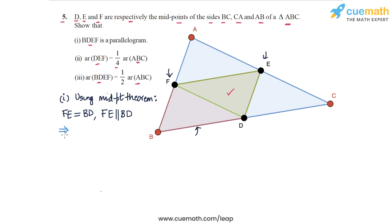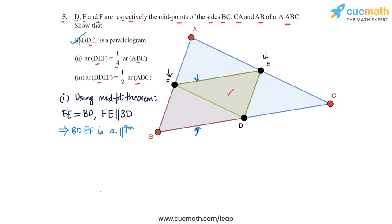So in the quadrilateral BDEF, we have a pair of opposite sides FE and BD which are equal as well as parallel, and this means that BDEF is a parallelogram — because in any quadrilateral, if one pair of opposite sides are equal and parallel, then the quadrilateral is a parallelogram. So this proves part one.